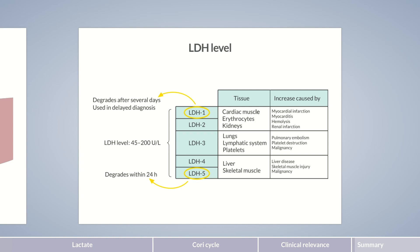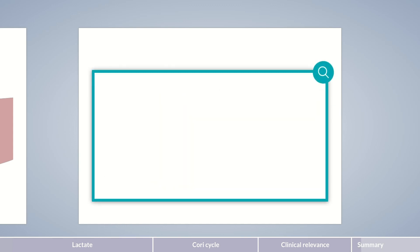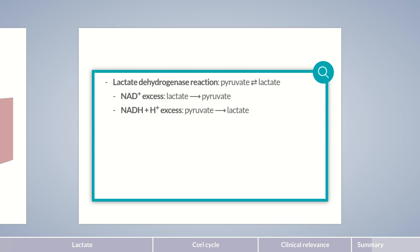Now, let's move back from our clinical note to the biochemistry of the Cori cycle and to the question: what are the most important take-home messages? We've summarized the five most important facts for you. The reversible conversion of pyruvate to lactate, which is most important for anaerobic metabolism, is catalyzed by the enzyme lactate dehydrogenase. If there's an excess of NAD+, lactate dehydrogenase forms pyruvate. In the case of excess NADH and H+, pyruvate is converted to lactate.